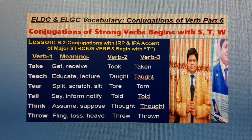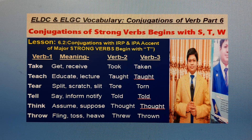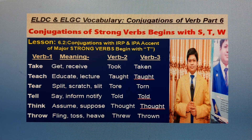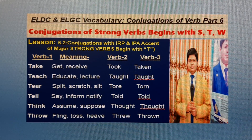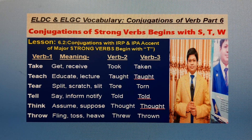Verb B1: Tear. English meaning: Split, scratch. Bangla meaning: Seraphila. B2: Tore. B3: Torn. Verb B1: Tell. English meaning: Say, inform. Bangla meaning: Voila. B2: Told. B3: Told.